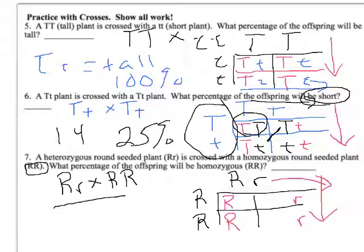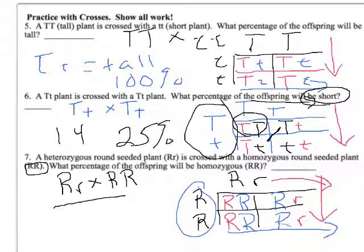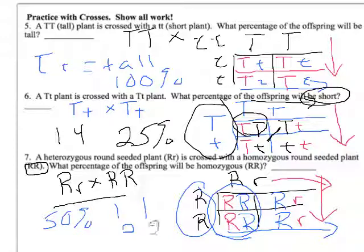We get two possibilities: homozygous dominant — purebred, true-breeding — and heterozygous. Interestingly, both outcomes resemble the parents, which isn't that common. 50% of offspring will be homozygous dominant — uppercase R, uppercase R — and 50% will be heterozygous. You can express this as 50%, one-to-one, or two-to-two by counting squares: two squares homozygous dominant, two squares heterozygous.